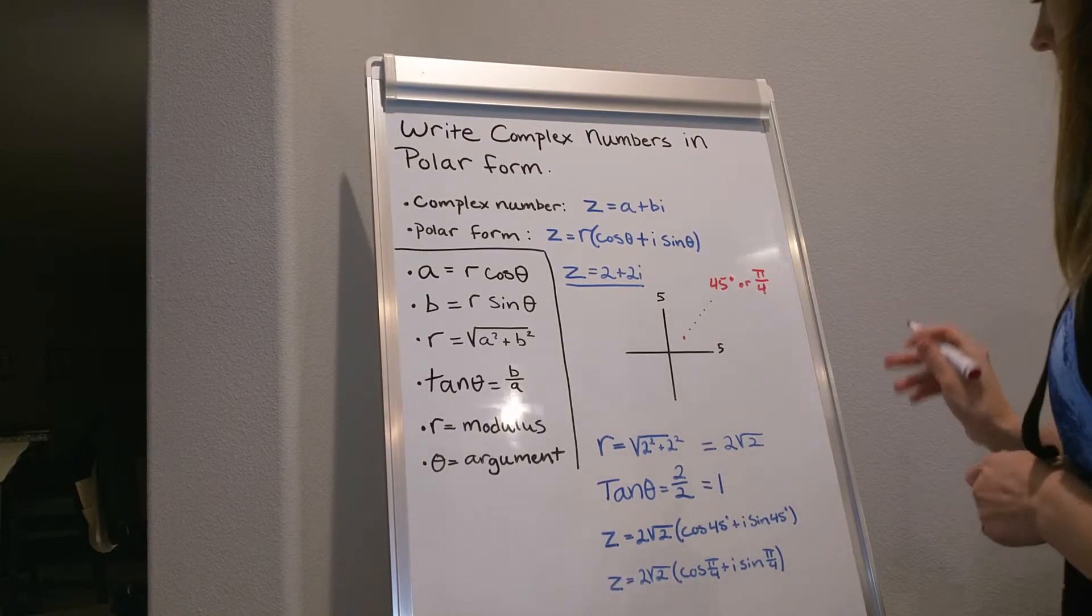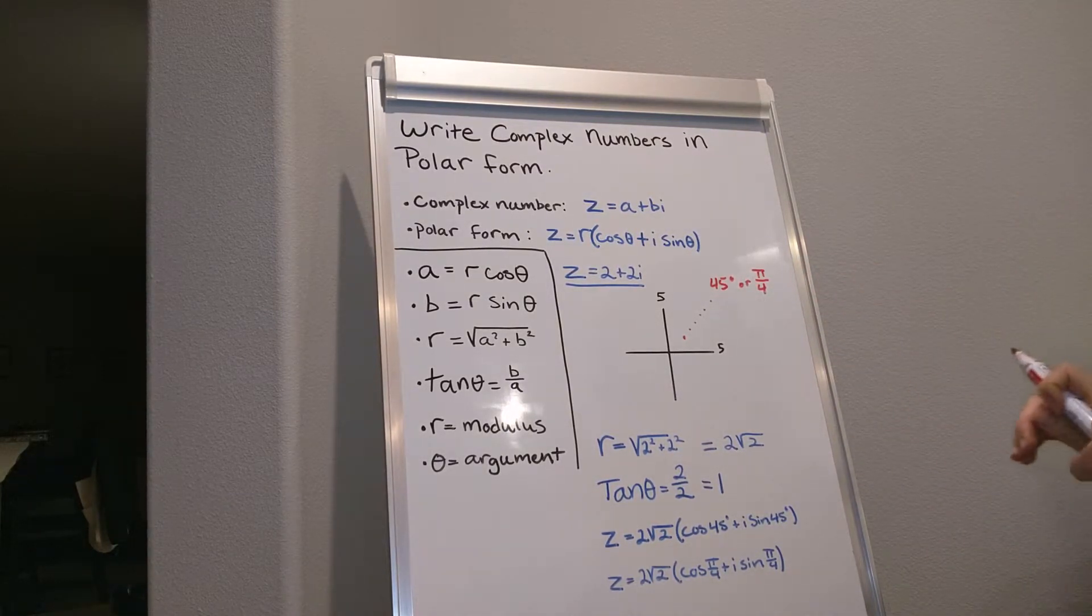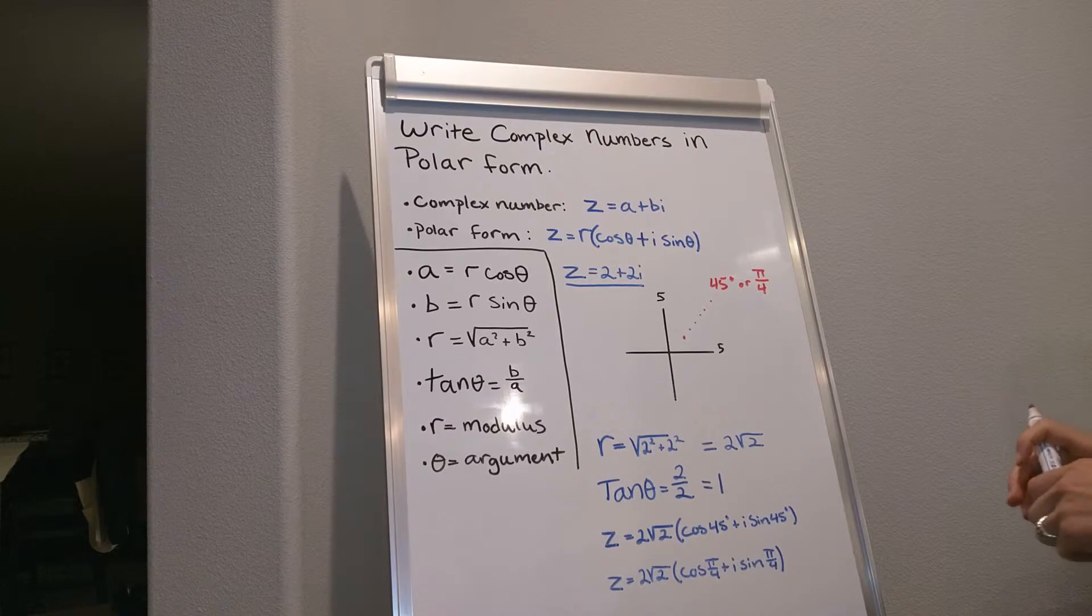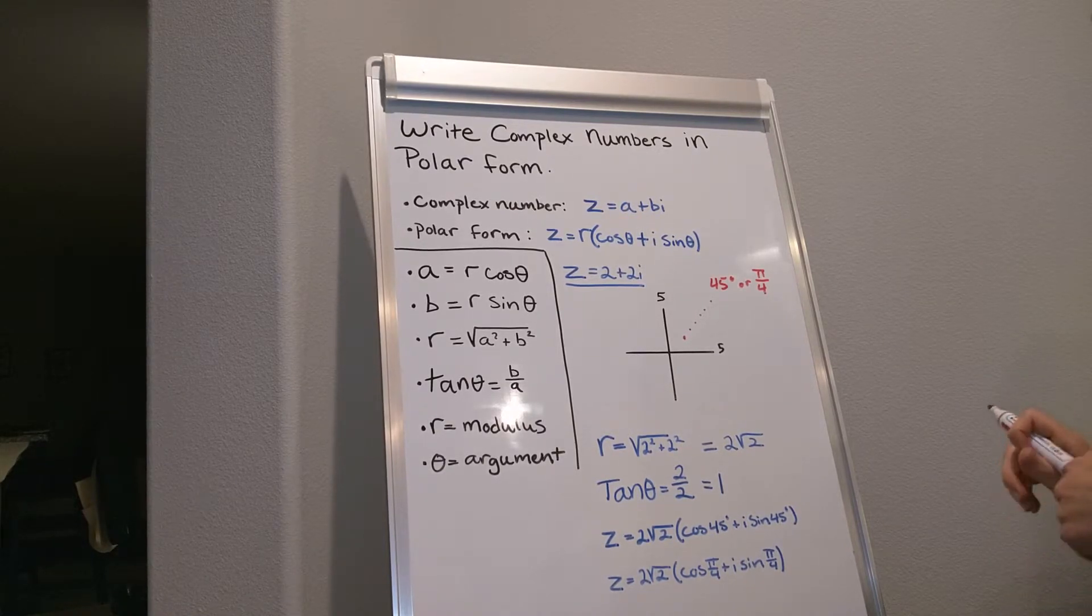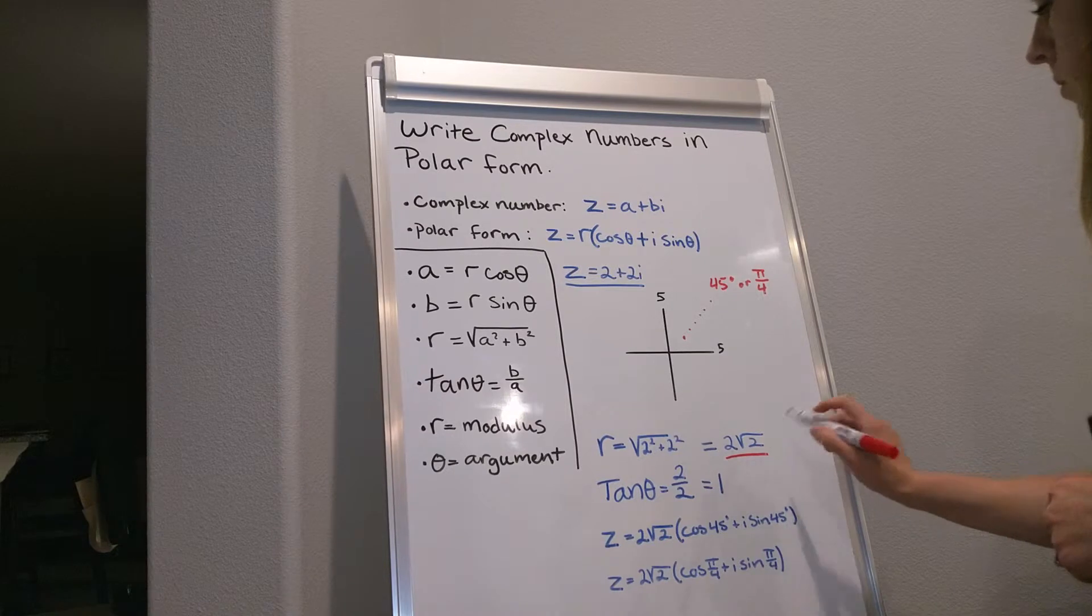So the next thing we're going to do is find r. We have square root of 2 squared plus 2 squared, which gives us 2 square root 2.